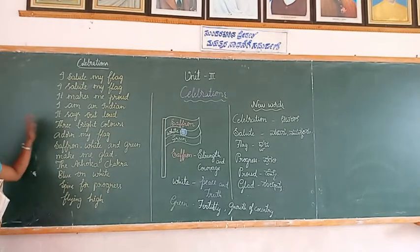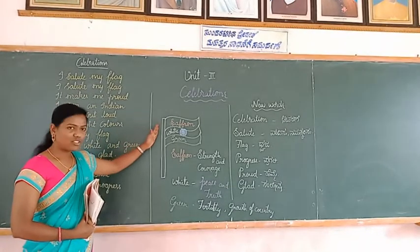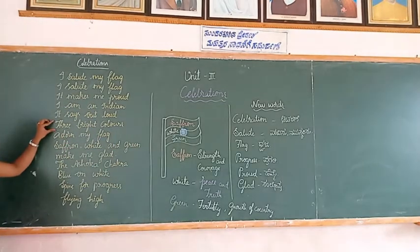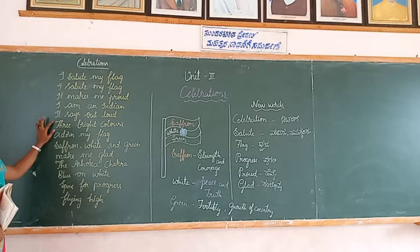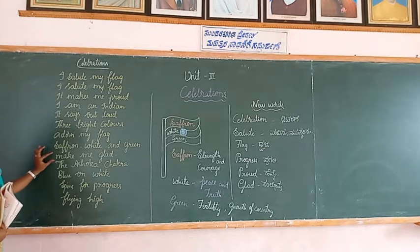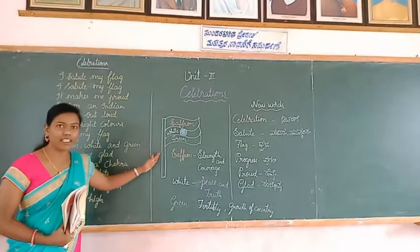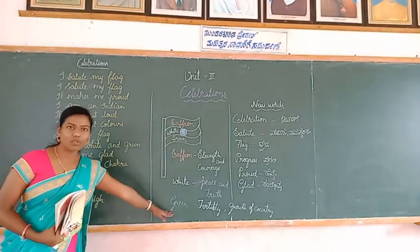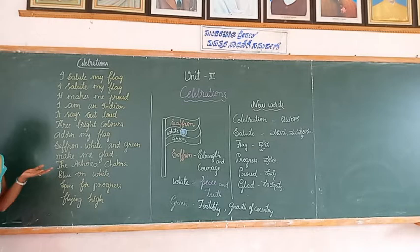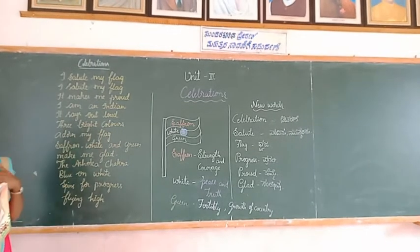'Three bright colors adorn my flag.' Our national flag has three colors: saffron, white, and green. Adorn means palangari zoo — to decorate. These three colors adorn our national flag and make me glad. Glad means happiness and cheerfulness — it is making me very happy. All these colors indicate something about our nation and our country.